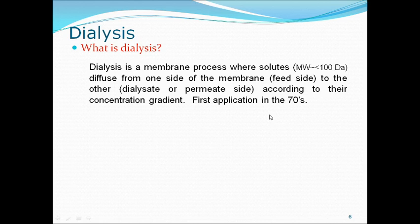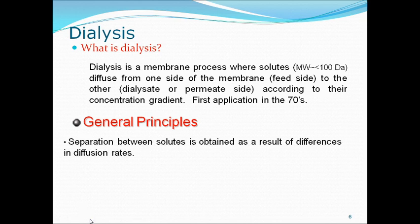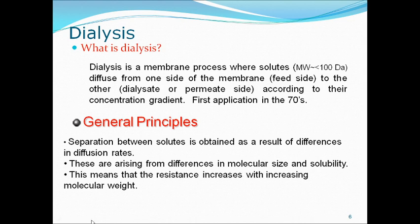The first application of dialysis came into picture in the 1970s; after that, a lot of advancement has occurred. Still people are working efficiently, and there is scope for you to improve the dialysis machine. Dialysis machines nowadays are available for lakhs of rupees — you can reduce the cost. If you are able to reduce the cost even by 10,000, that is an achievement. The general principle: separation between solutes is obtained as a result of differences in diffusion rates arising from differences in molecular size and solubility. Resistance increases with increasing molecular weight — if molecular weight is high, it will not diffuse because the membrane becomes a limiting factor.